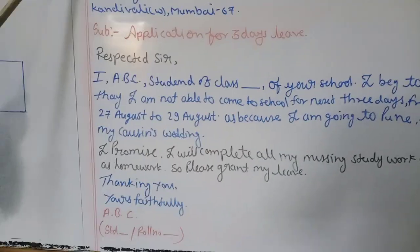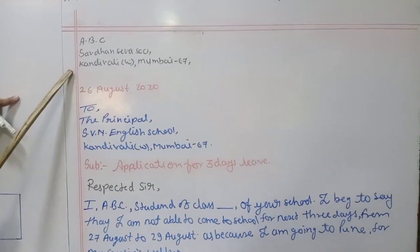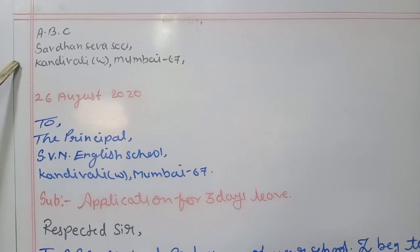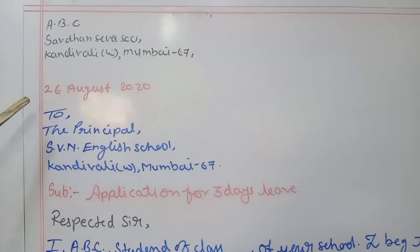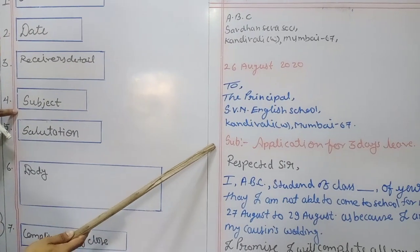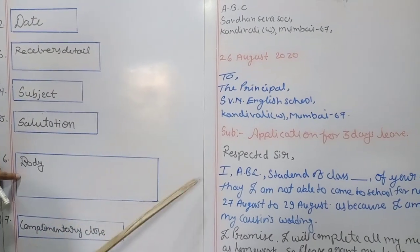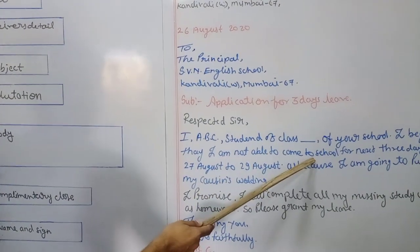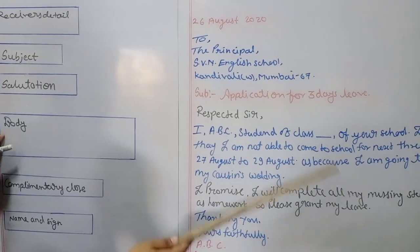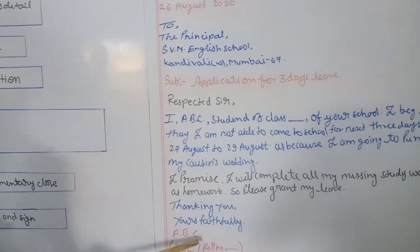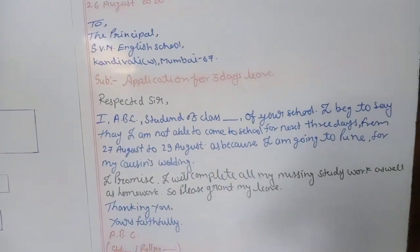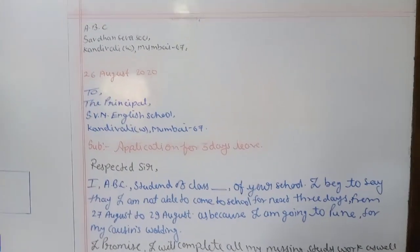This way we can write a formal letter to our principal for leave. The first one — sender's detail, we are the sender because we are writing the letter to our principal. Next is date, then receiver's detail, then subject. Salutation: 'Respected Sir.' Body: we introduced ourselves, written the purpose, given the reason why we are not able to attend school, and concluded the letter. Then complimentary close: 'Thanking you, yours faithfully.' And name and sign — our name, class, standard, and roll number. This is how we write the formal letter.